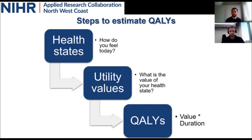What about quality of life? There are generic instruments which researchers use to describe the health states of patients or individuals in general. One of these instruments is the EQ5D, which is commonly used in economic evaluation to determine the health-related quality of life of patients. The EQ5D is based on five dimensions which try to capture health-related quality of life: mobility, self-care, usual activities, pain and discomfort, and anxiety and depression. How do you go from that to quality of life years?